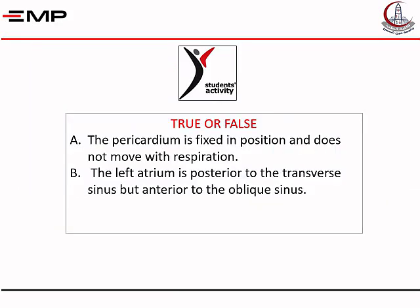Now it's time to test your knowledge. Please pause the video, read the questions, try to answer them, then play the video to hear the answers. The first question says the pericardium is fixed in position and does not move with respiration — true or false? It is false, because since the pericardium is fixed to the diaphragm, it moves down with inspiration and up with expiration. The limit of movement is just one vertebra. The pericardium lies opposite the middle fourth thoracic vertebrae — that is 5, 6, 7, and 8 — and when you inspire, it descends to 6, 7, 8, and 9.